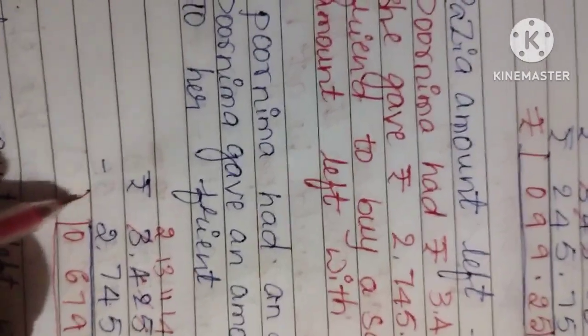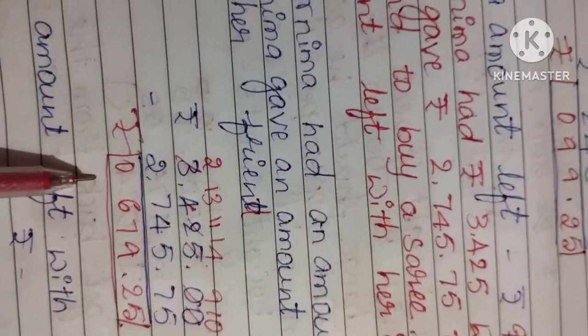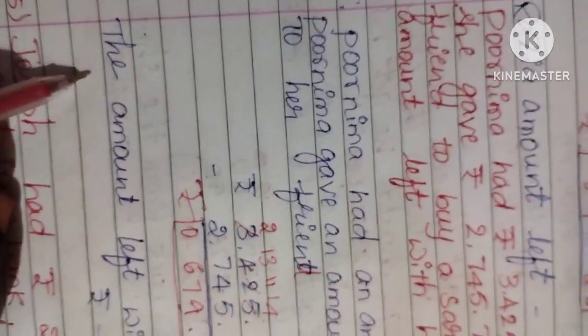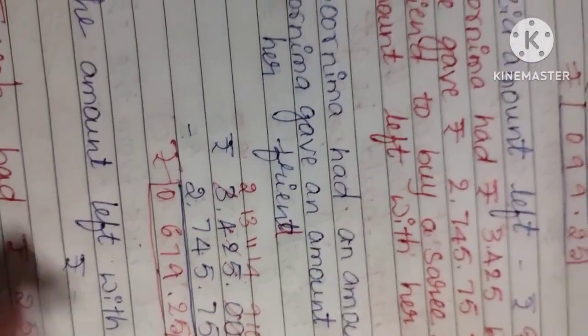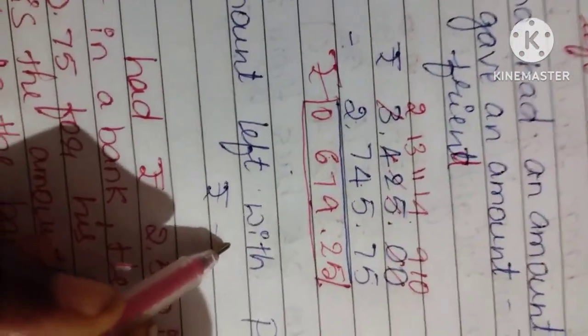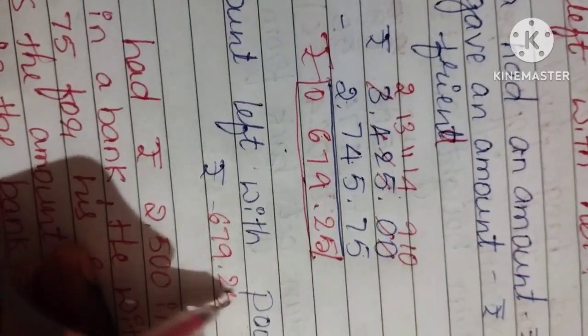So what is the amount left with her? See, 679 rupees 25 paise. The amount left with Poornima: rupees 679.25.